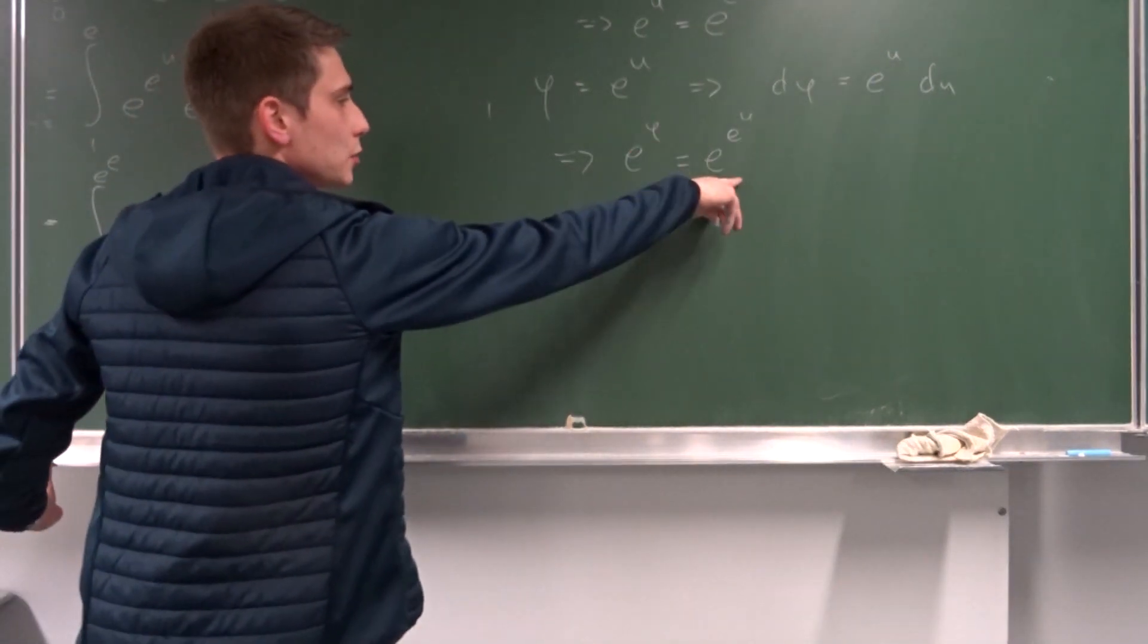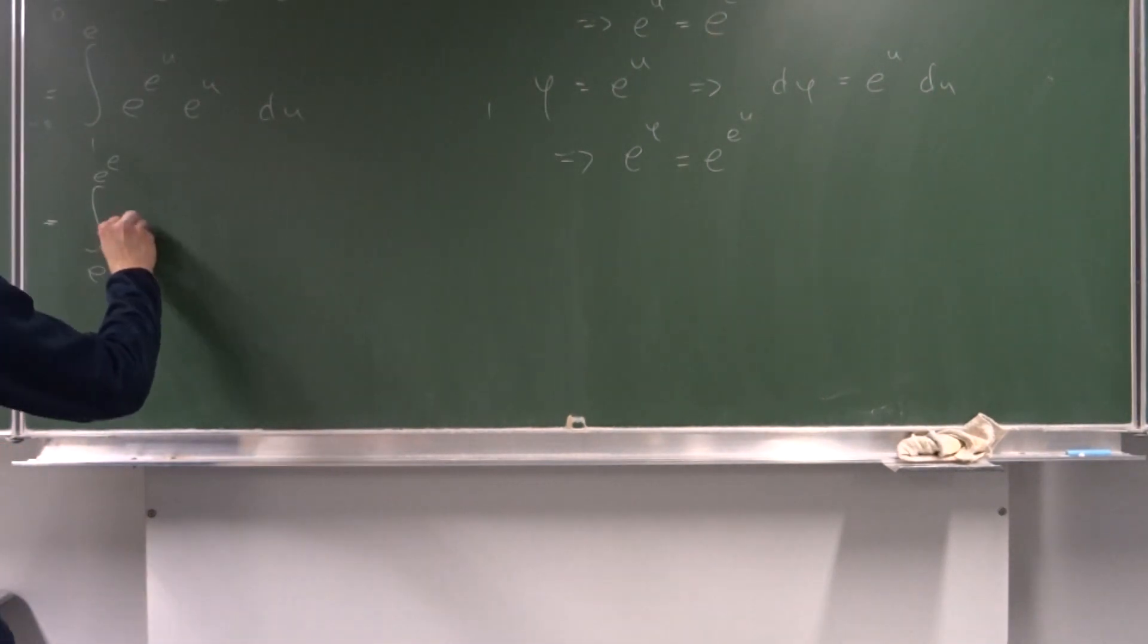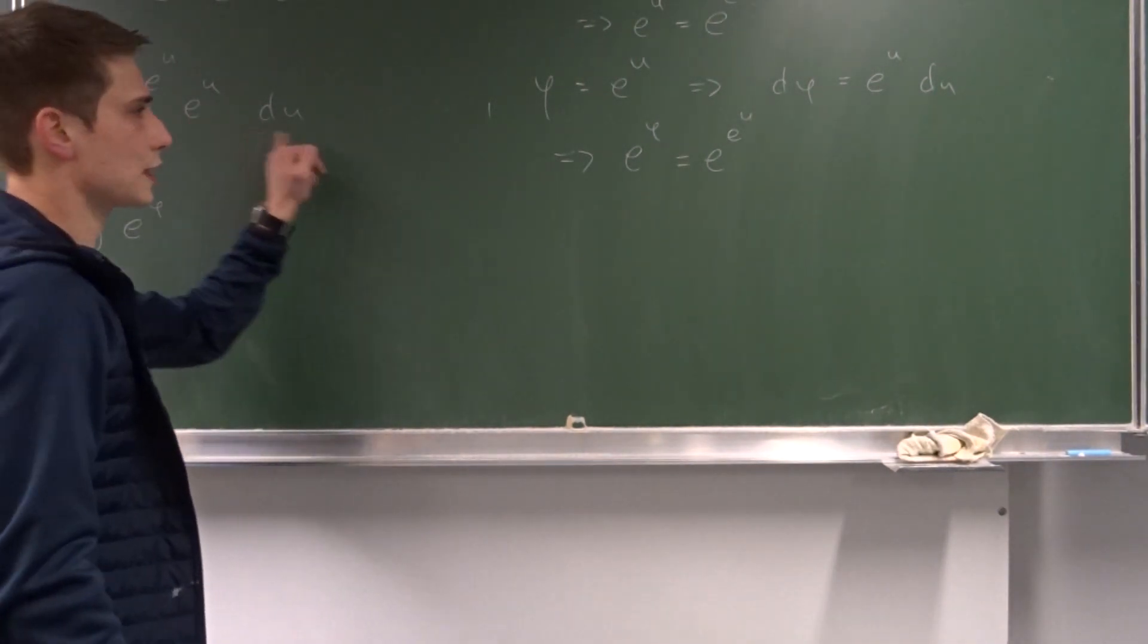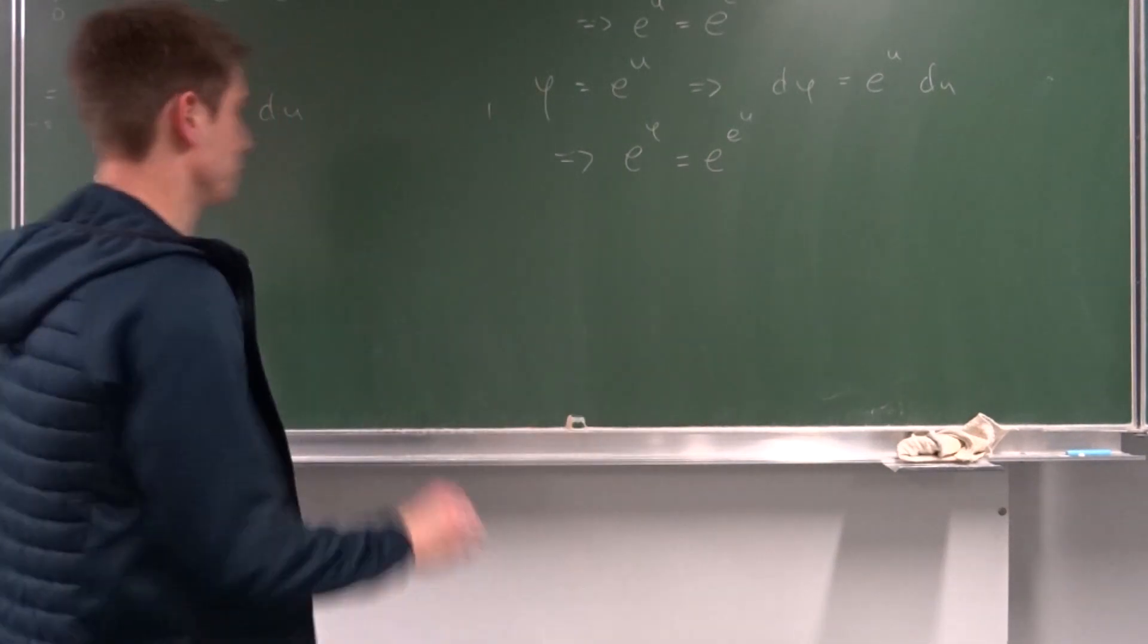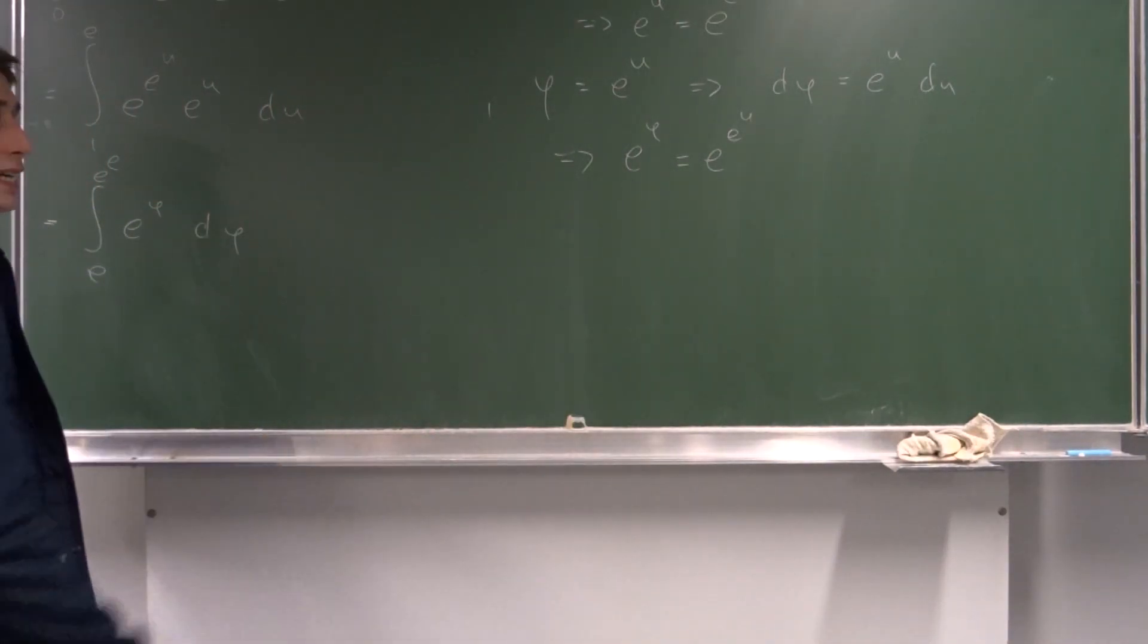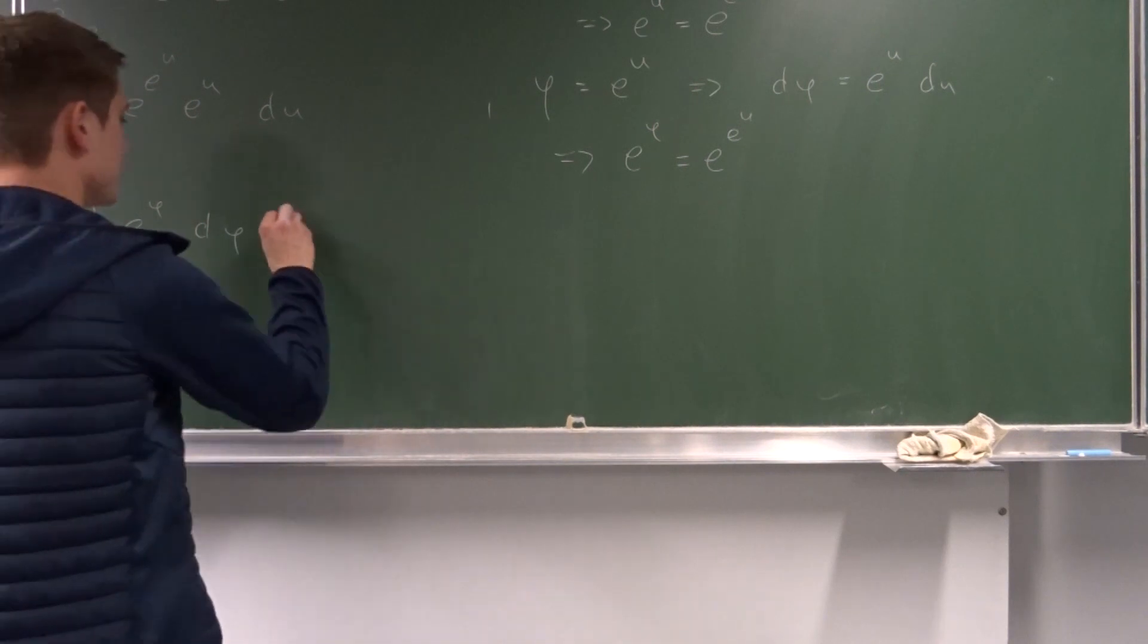Well, e to the phi equals e to the e to the u. So, we can plug this in. So, that's e to the phi. And we also know that e to the u times du is just d phi. And then, we are basically done because we know how to integrate this right here.